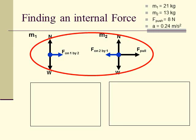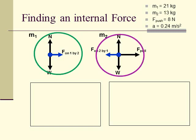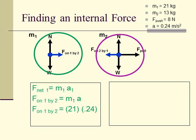Now, in order to find the internal force — the tension force between the two objects — looking at the whole system does not work, because those forces canceled out and just disappeared. When I solve for an internal force, I need to look at one of the two objects individually. I can look at mass 1 or mass 2 — it doesn't matter. Looking at mass 1: net force of object 1 equals mass of object 1 times acceleration of object 1. The net force is just the force on 1 by 2. Now that I know acceleration, I can solve for the force of 1 by 2 — it is 3.12 Newtons.